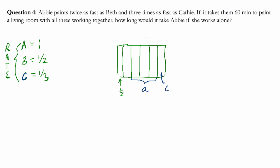Beth paints half of whatever Abby paints. So if Abby paints three pieces, she would paint one half of that. So a half of three is one and a half pieces.